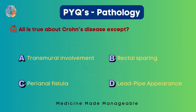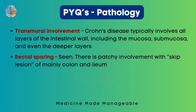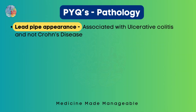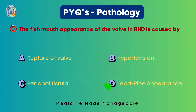Last question: all of the following are true about Crohn's disease except — transmural involvement, rectal sparing, perianal fistula, or lead pipe appearance? Transmural involvement is true — Crohn's disease typically involves all layers. Rectal sparing is also seen, with patchy involvement and skip lesions, mainly in the colon and ileum. Perianal fistula is also commonly seen. But lead pipe appearance is not — this is typically associated with ulcerative colitis. In the image, the large intestine looks like a lead pipe, which is why it is given that name. The answer is lead pipe appearance.